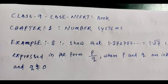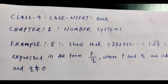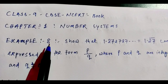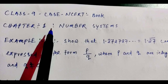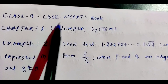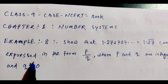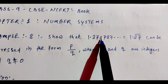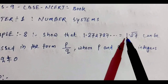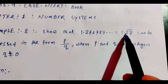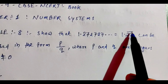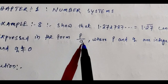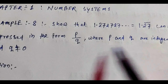Hello viewers, welcome to my channel. I am Purnindu, your math teacher. Today I am going to explain Example 8 of Chapter 1, Number System, from the Class 9 CBSE NCERT book. Example 8 states that 1.272727... equals 1.27 bar, and can be expressed in the form P by Q where P and Q are integers.